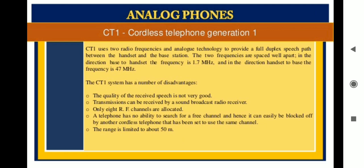The first-generation cordless telephone had a number of disadvantages. The quality of the received speech was not very good, and transmissions could be received by a standard broadcast radio receiver. The range was limited to only 20 to 50 meters, but with digital technology the range has been increased to allow users to move up to 100 meters.